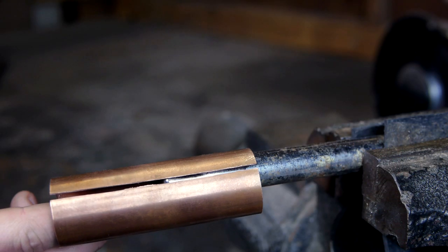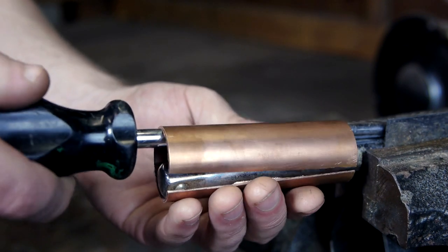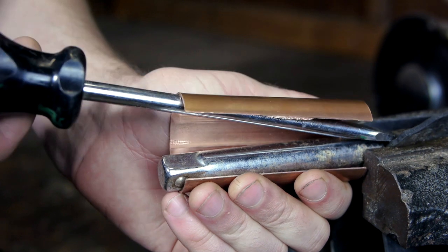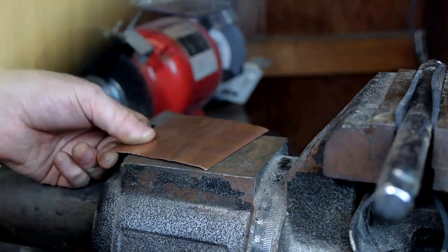Now for the next part of this build, I'm going to need a copper sheet, which I can make by cutting a section of pipe lengthwise and stretching it open with a screwdriver. Once I've got it as flat as I can that way, the rest of the work is done with a mallet and hammers.